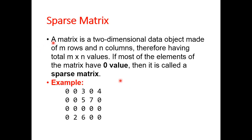So now I am explaining the concept of sparse matrices. A matrix basically is a two-dimensional data object made of m rows and n columns, therefore having a total of m × n values. Now, if most of the elements of the matrix have zero value, then it is called a sparse matrix.